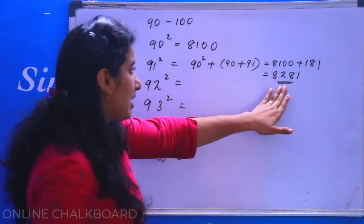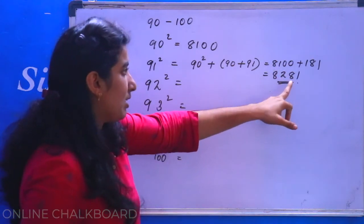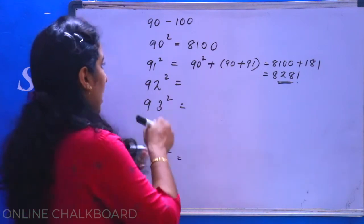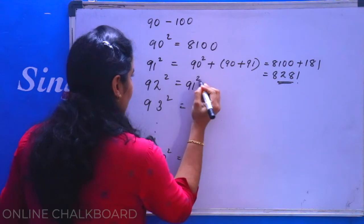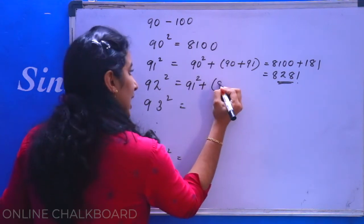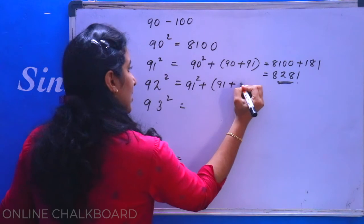Then we have 8281. Now we have 92 square. We have 91 square plus 91 plus 92.